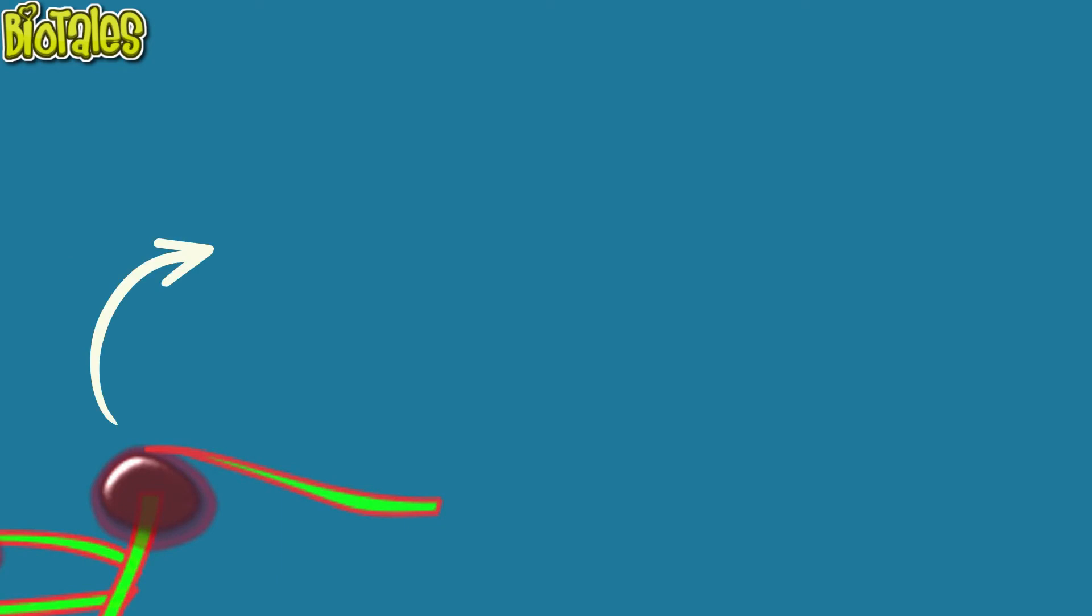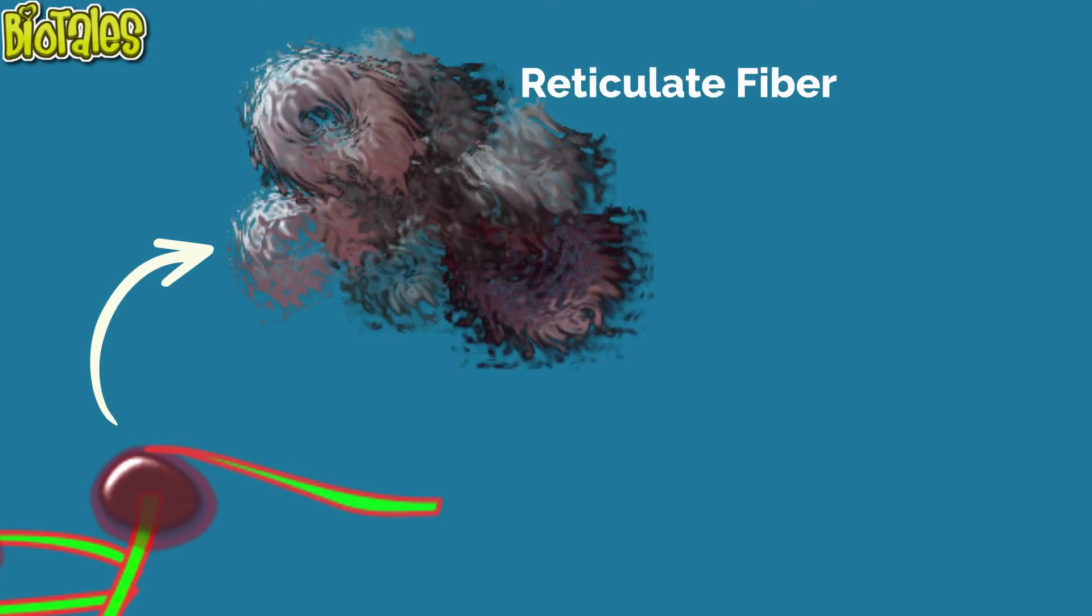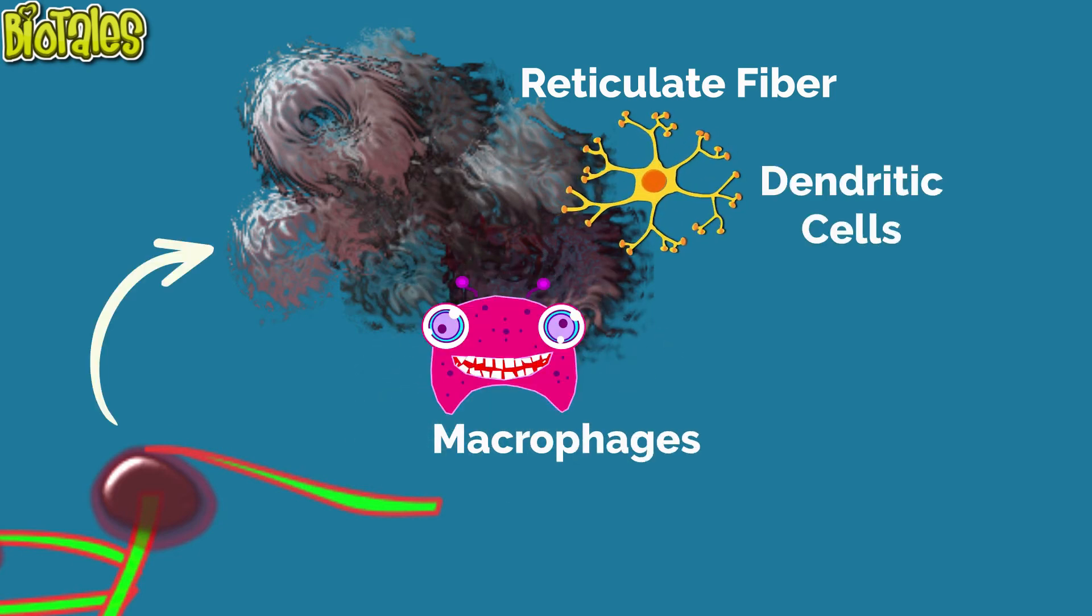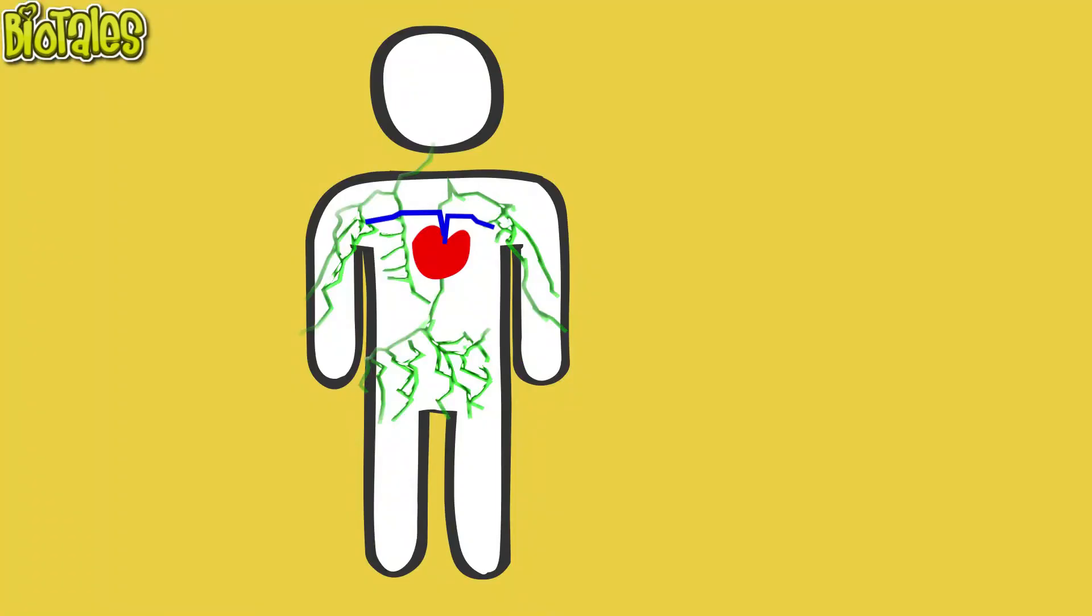there are reticular fibers, macrophages, and dendritic cells which trap microbes and destroy them by a process called phagocytosis.